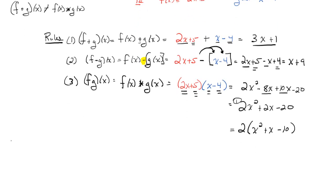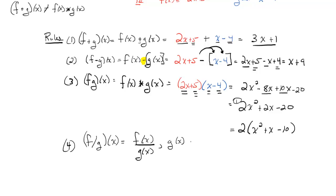Our fourth property is division, written as (f divided by g) of x, which equals f of x divided by g of x — provided that g of x does not equal zero, because we can never have zero in the denominator. Plugging in, we have 2x plus 5 over x minus 4. This cannot be simplified further, so our final answer is (2x + 5) / (x − 4).